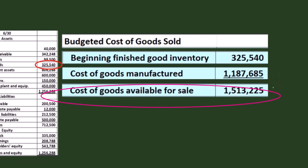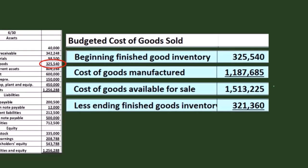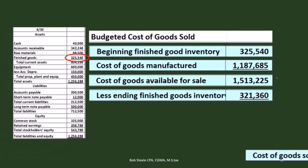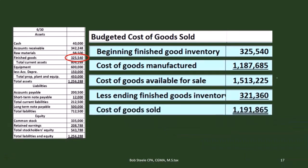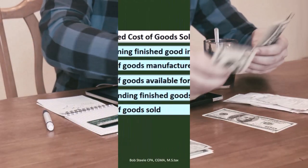This gives us the cost of goods available for sale — the amount available if we sold everything for that period. Then we subtract the ending finished goods inventory. In a textbook problem they give you that number; in real life you estimate it. That gives us the cost of goods sold, which we can then use as part of the budgeted income statement, the final piece needed before moving on to the balance sheet.